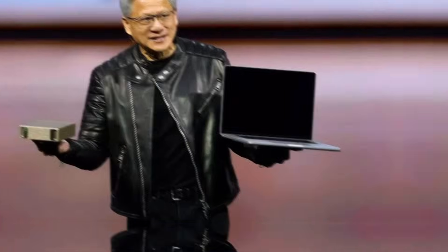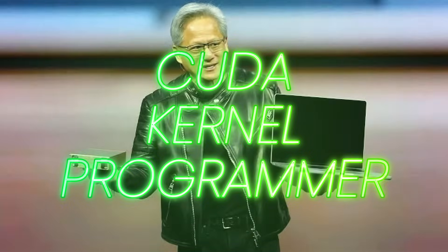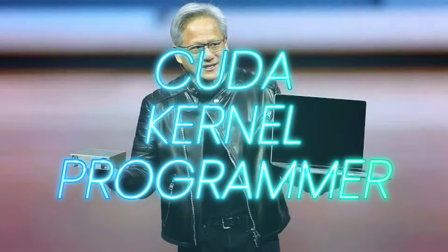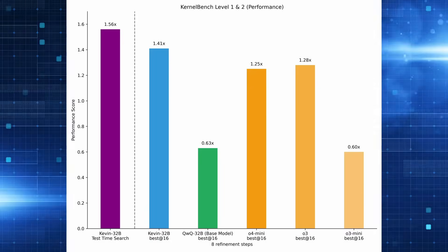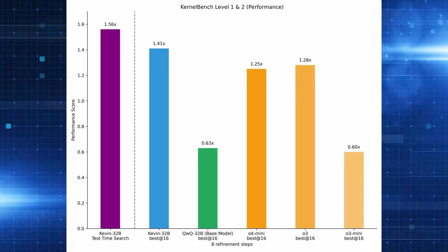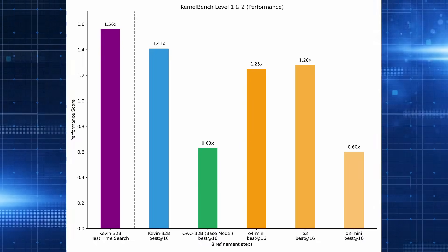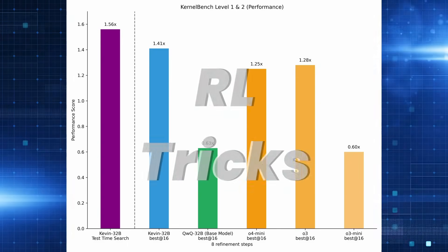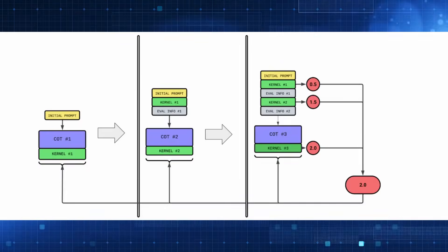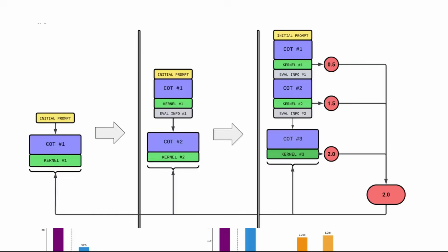Devin's first open source model is a CUDA kernel programmer, a GPU programmer. This open source model, which is a fine-tune of a 32 billion parameter model, beats O3. OpenAI's flagship model is beaten by a 32 billion parameter fine-tuned model, and they've done a bunch of nuanced fine-tuning things.